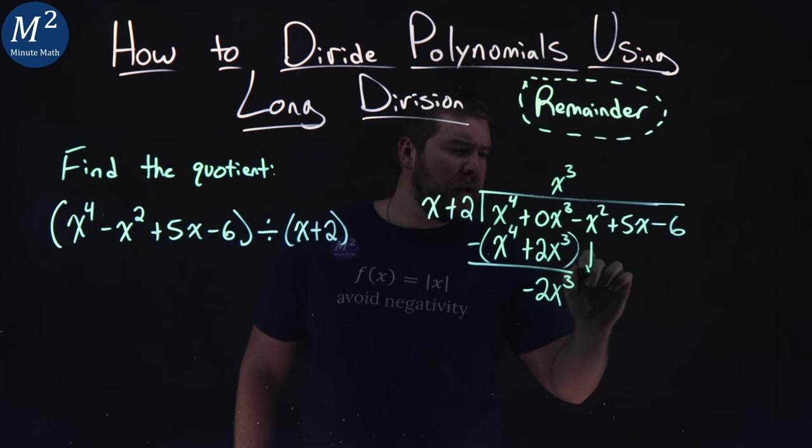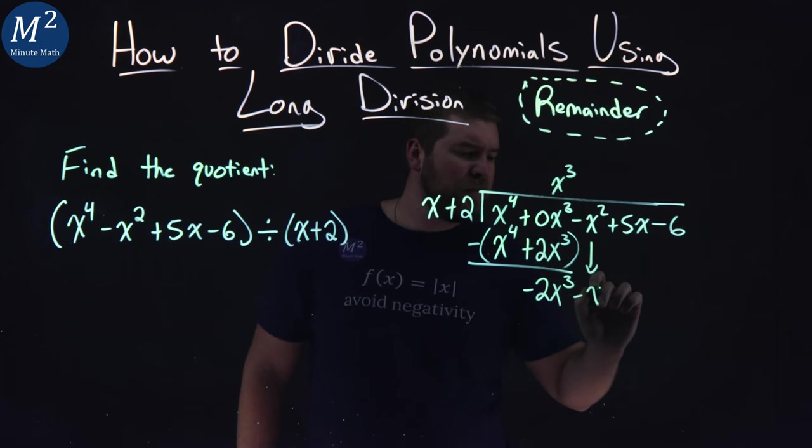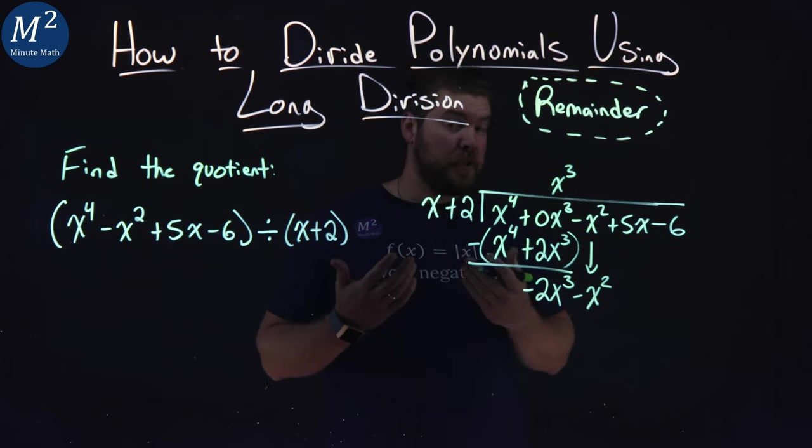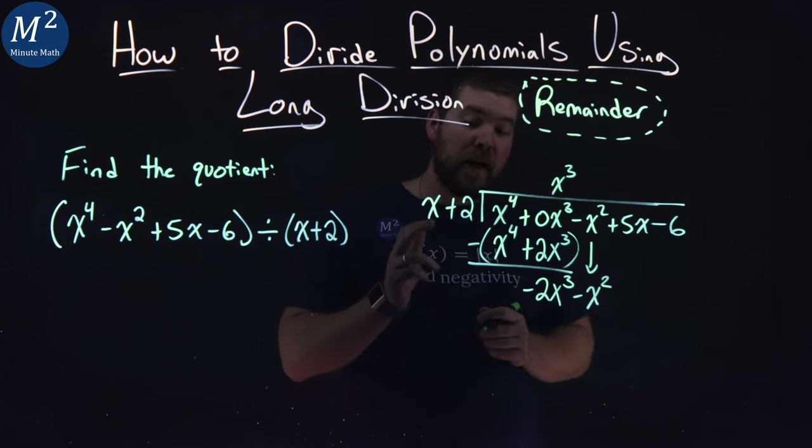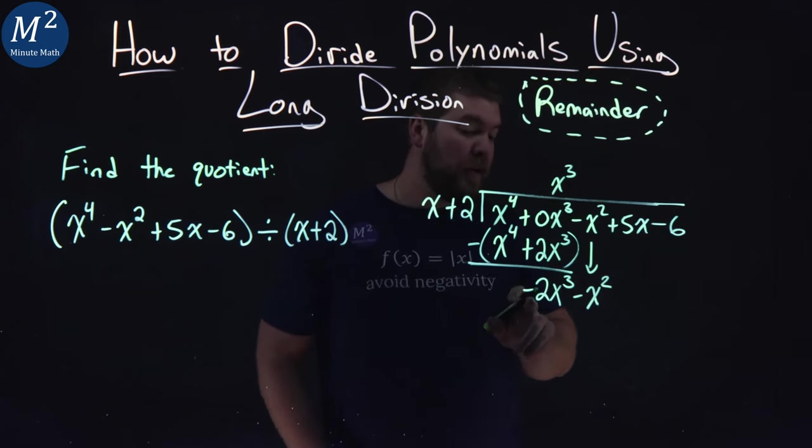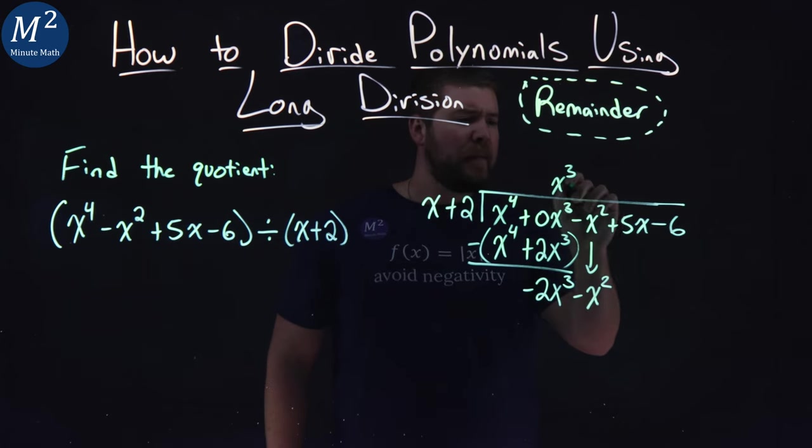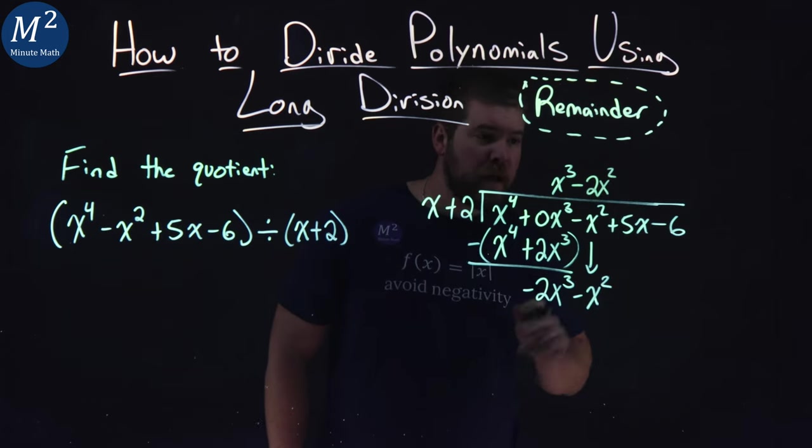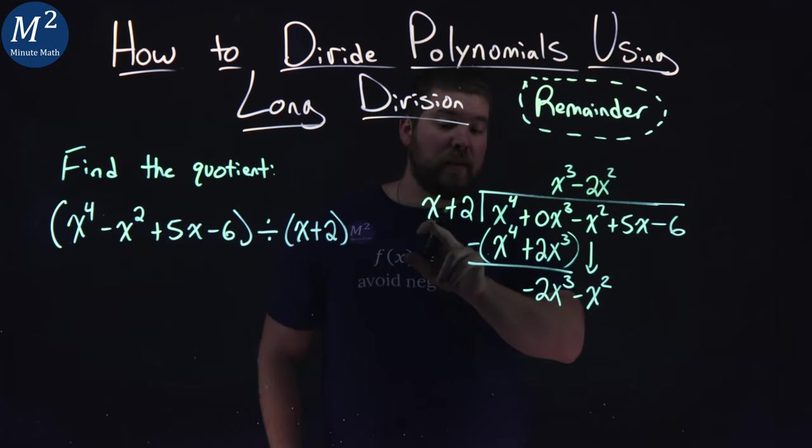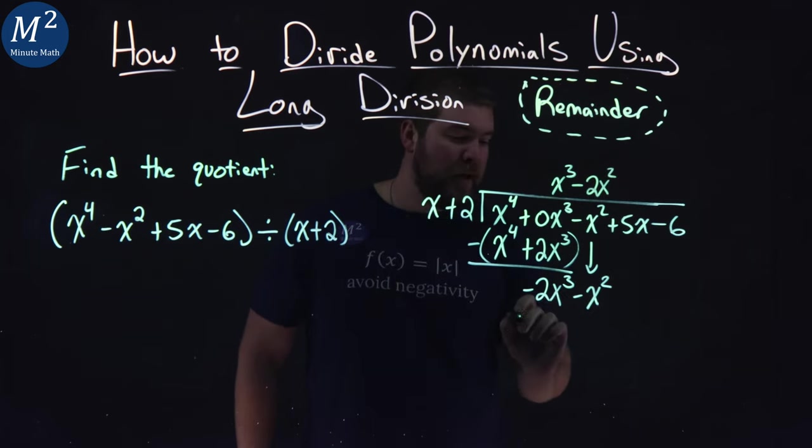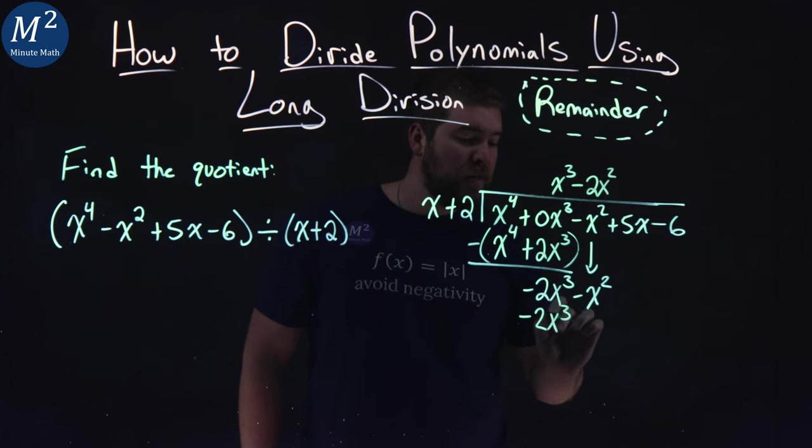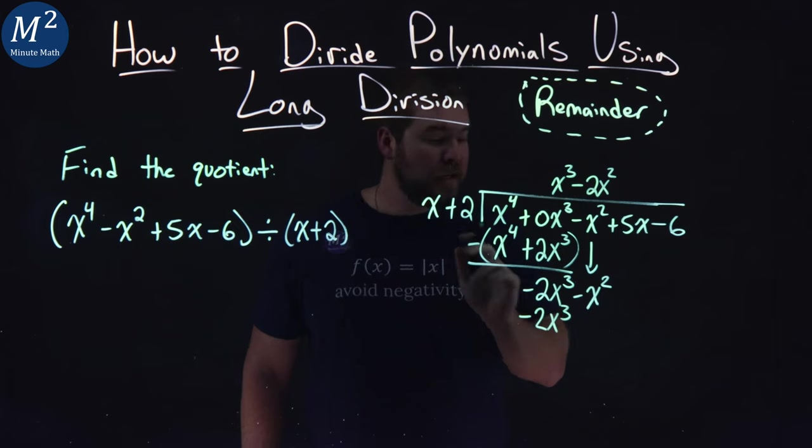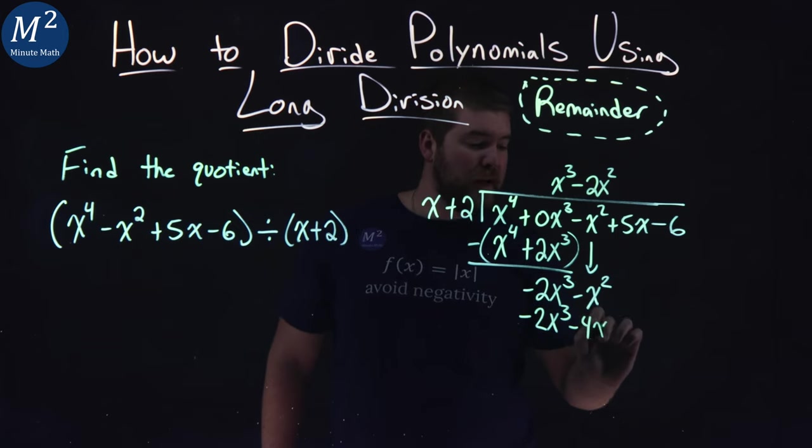We then bring down the minus x squared here. From there, we ask ourselves the same question as before. What times x gives me negative 2x to the third? That's going to be minus 2x squared. Negative 2x squared times x gives me negative 2x to the third, and we continue on. Negative 2x squared times 2 is minus 4x squared.